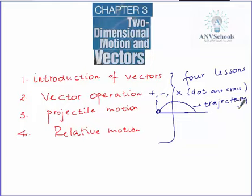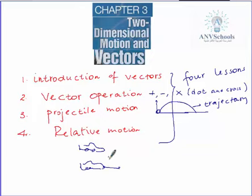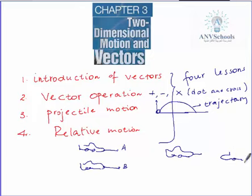We'll study in detail the maximum height, initial speed, range, and time of projectile motion. Under lesson four, we will study the relative velocity of two objects that are traveling — for example, two cars moving in the same direction or heading towards each other in opposite directions. We'll study the velocity of car A relative to car B, or the velocity of car B with respect to car A.